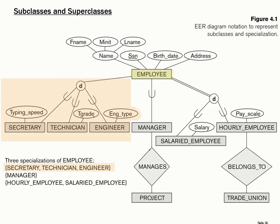So why subclass at all? As you can see from this diagram, the three subclasses of secretary, technician, and engineer have each been selected because they have a unique field. For secretaries, it's the typing speed — that does not apply to any other kind of employee. For technicians, it's their T grade, an attribute that only applies to that subclass. For engineers, it's the engineering type: are they electrical engineers, mechanical engineers? Again, an attribute specific to the subclass.